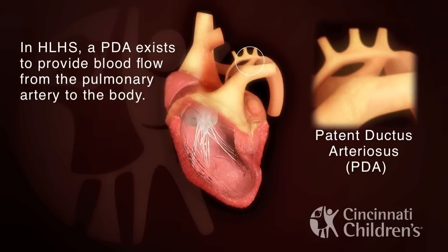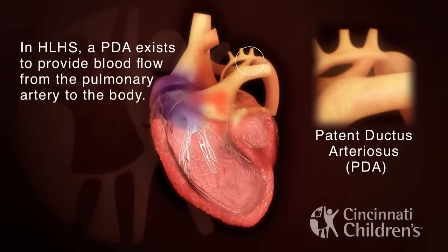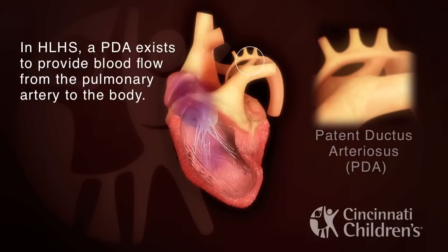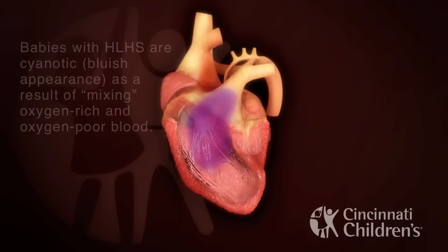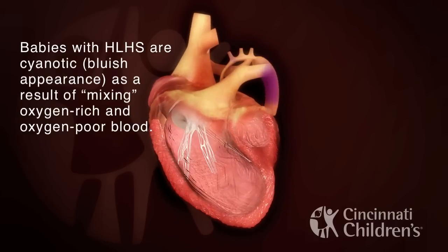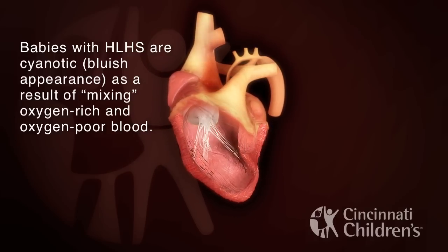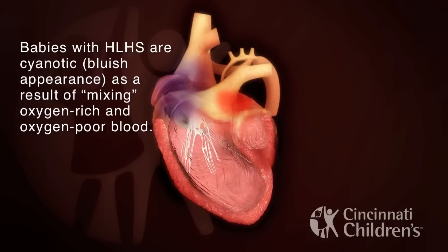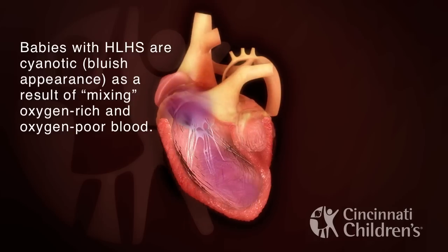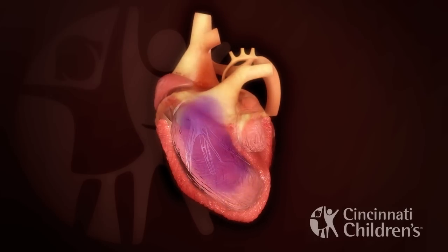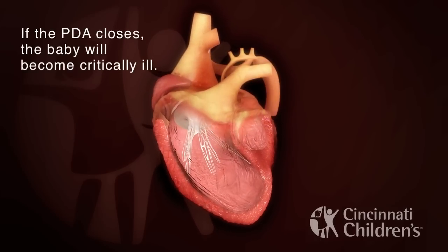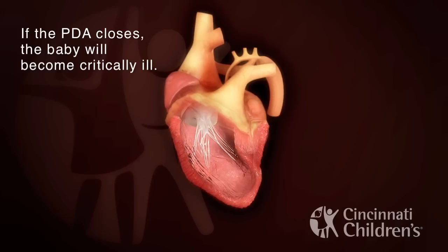In HLHS, a PDA exists to provide blood flow from the pulmonary artery to the body. Babies with HLHS have a bluish appearance, known as cyanosis, as a result of mixing oxygen-rich and oxygen-poor blood. If the PDA closes, the baby will become critically ill.